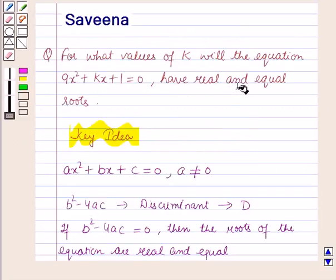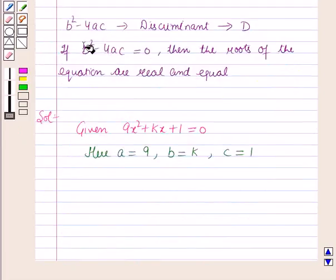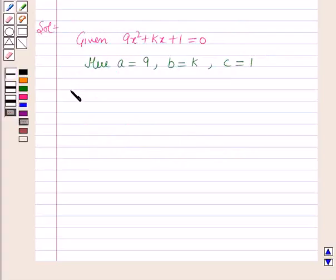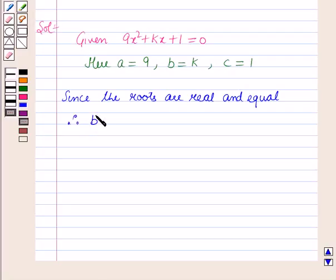In the question it is given that the equation is having real and equal roots. We know that when b square minus 4ac equals 0, then the roots are real and equal. So we can write, since the roots are real and equal, therefore b square minus 4ac equals 0.